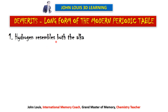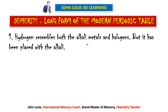Now the demerits of the modern periodic table. The first demerit: hydrogen resembles both the alkali metals and halogens, so it is unpredictable and no particular place can be firmly assigned. Since hydrogen is the first element in the periodic table, it is placed along with alkali metals in the first group.